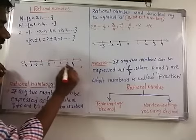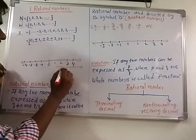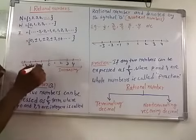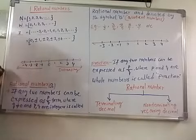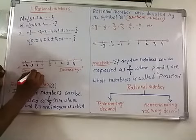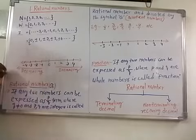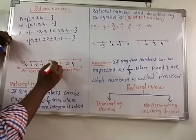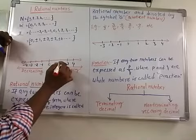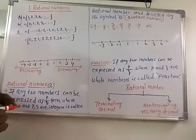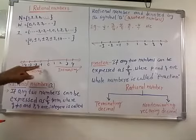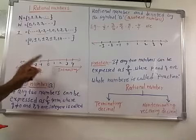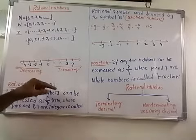The numbers 1, 2, 3, 4 going right are called increasing numbers and positive numbers. The numbers going left — −1, −2, −3, −4 — are called decreasing numbers and negative numbers. So 1, 2, 3, 4 are positive integers; −1, −2, −3, −4 are negative integers; and 0 is neither positive nor negative.